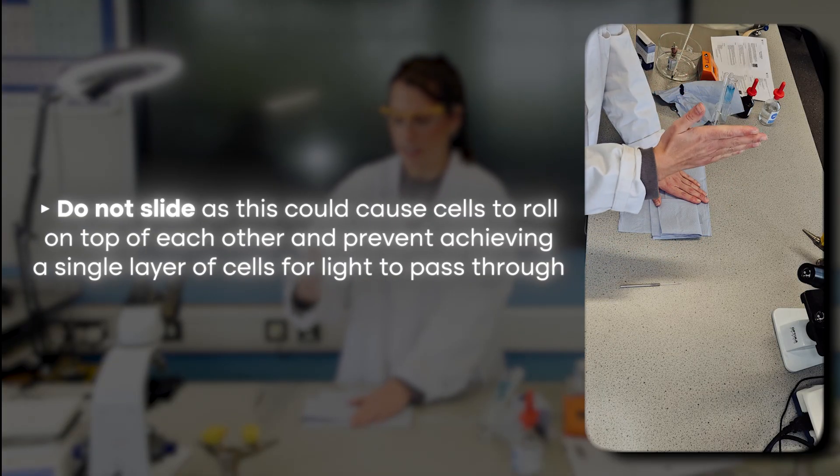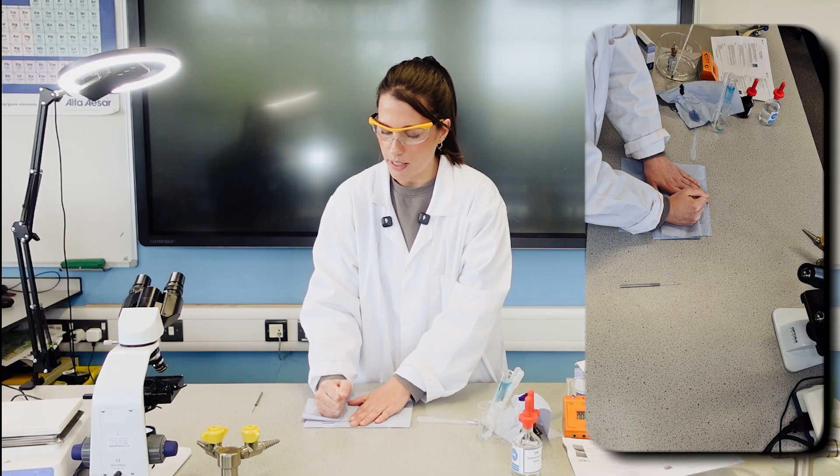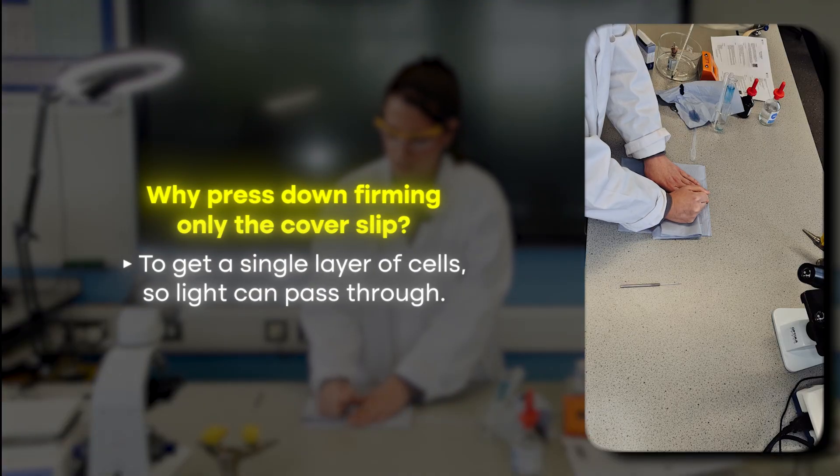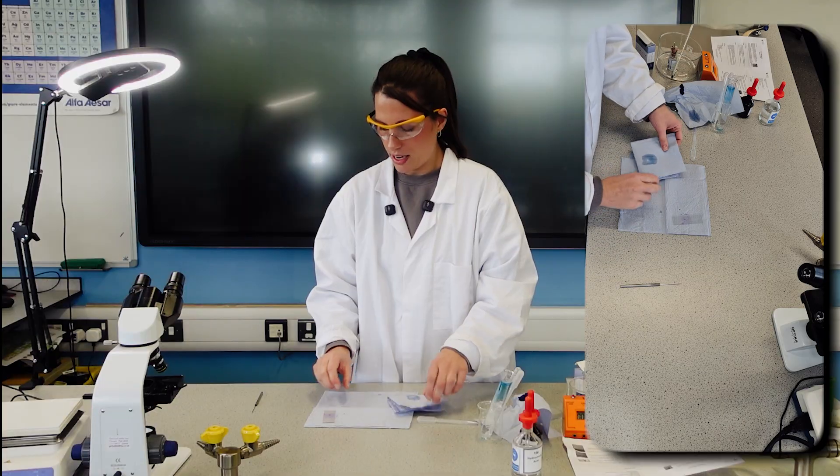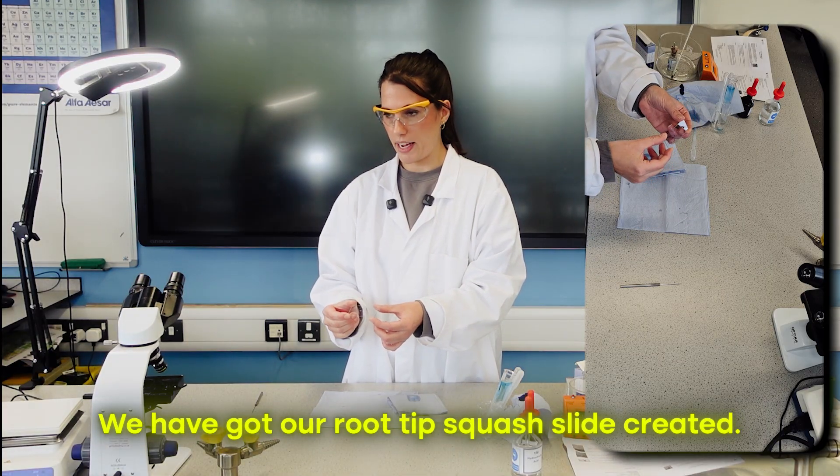It's also going to absorb any liquid either side. Just smooth my hand, not sliding it because we don't want to slide it. I'm keeping it in one position but just going back and forth, so it's going to gently squash it. And now we can see we have our root tip squash slide created.